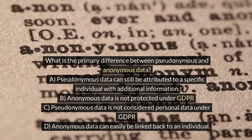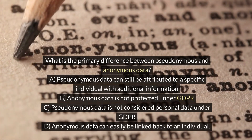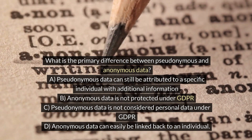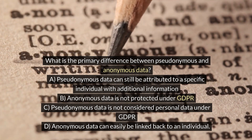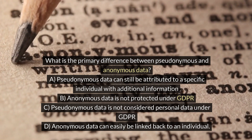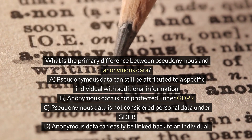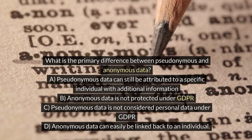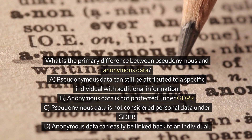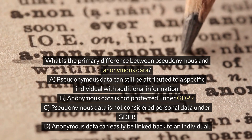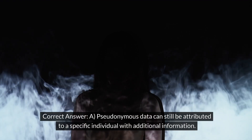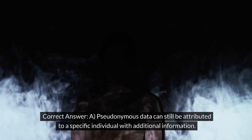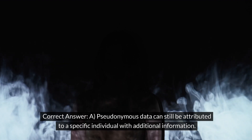What is the primary difference between pseudonymous and anonymous data? A. Pseudonymous data can still be attributed to a specific individual with additional information. B. Anonymous data is not protected under GDPR. C. Pseudonymous data is not considered personal data under GDPR. D. Anonymous data can easily be linked back to an individual. Correct answer: A. Pseudonymous data can still be attributed to a specific individual with additional information.